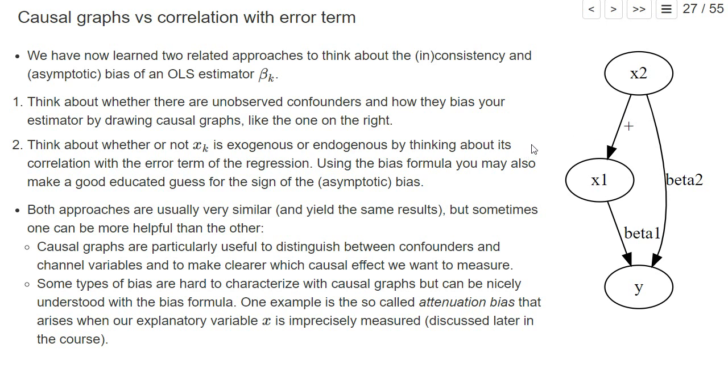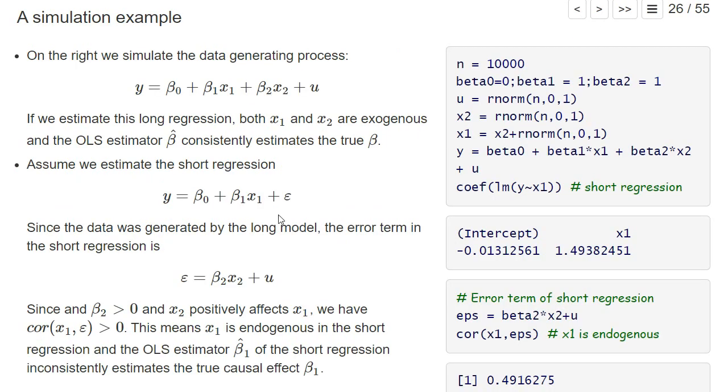The other way to think about it is that we basically write down and think about what's in the error term of this regression. If we write down a short regression and know that x2 is part of it, then we see there's a correlation between x1 and the error term. And if you have a positive correlation in a simple linear regression, we also will have a positive bias.